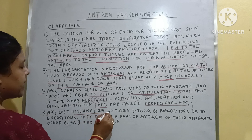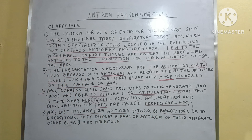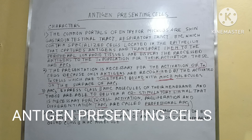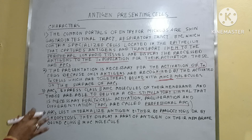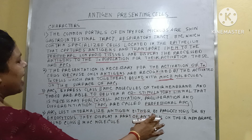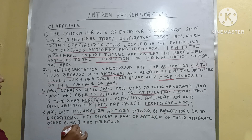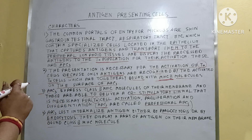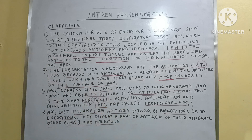Number 4: these APCs have lost the ability to internalize antigen either by phagocytosis or by endocytosis. They cannot internalize antigen by phagocytosis or endocytosis. They only display the part of the antigen on their membrane-bound class II MHC molecules. They display a part of antigen bound to the MHC molecules, and then this complex is presented to the TH cells for the activation of the TH cells, and then TH cells try to destroy the antigens.